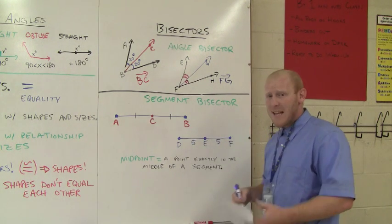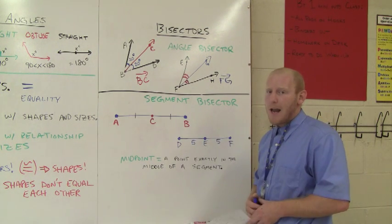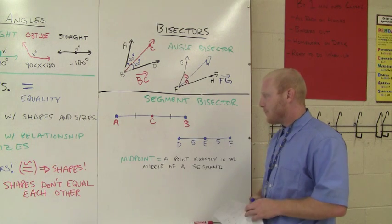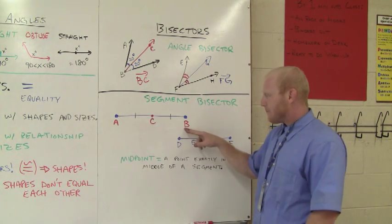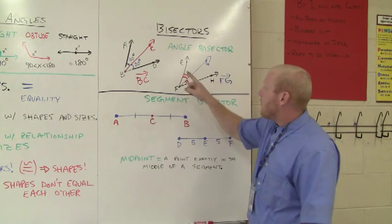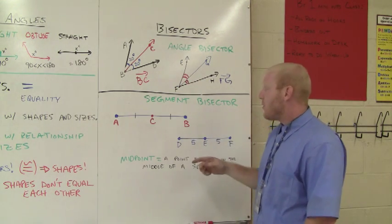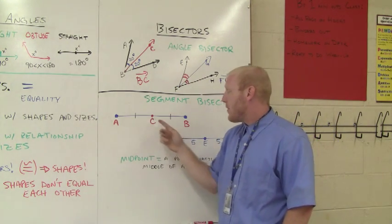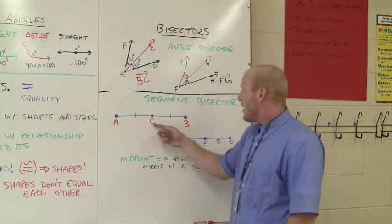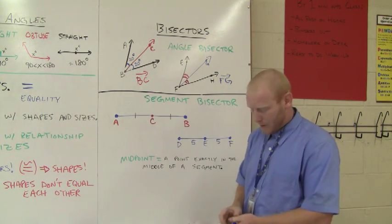Segment bisector. Same concept, but now we're not dealing with an angle anymore. We're dealing with a segment. Here we have segment AB. Now like before, when we use the arcs for the angles, we're going to use these little hash marks to tell me that this segment is congruent to this segment.